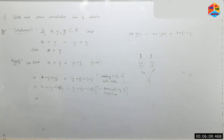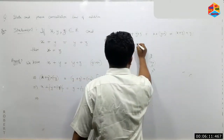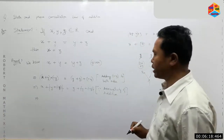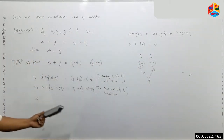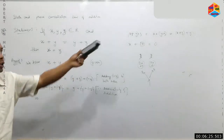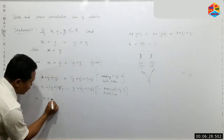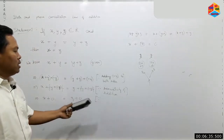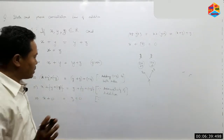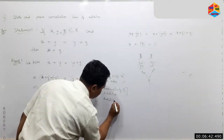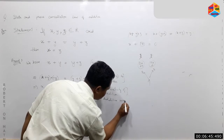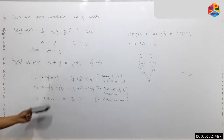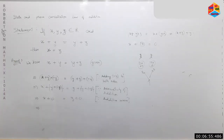By the additive inverse property, y plus minus y equals zero. So x plus zero on the left equals x plus zero. We apply the additive inverse, which gives us zero.